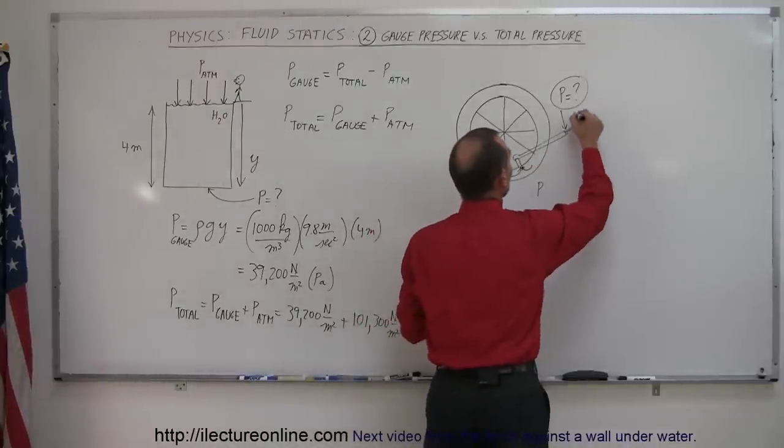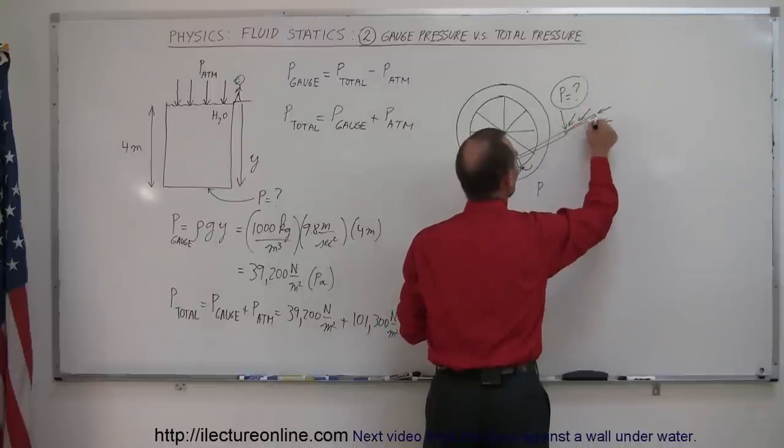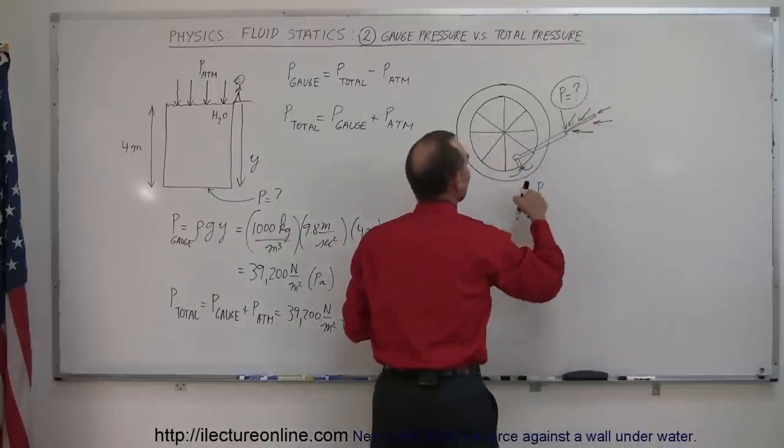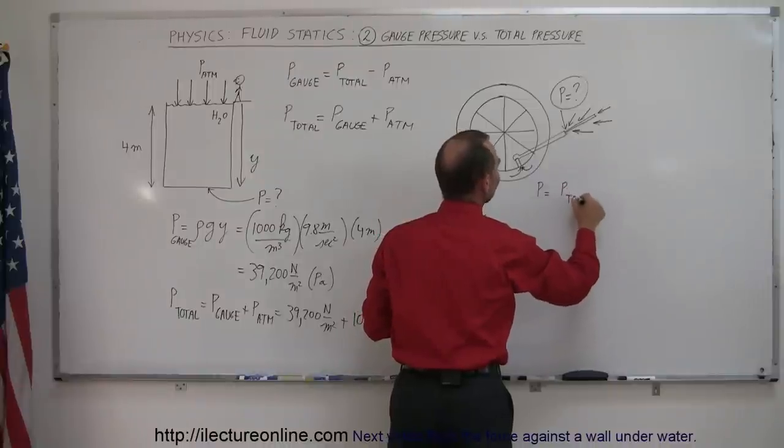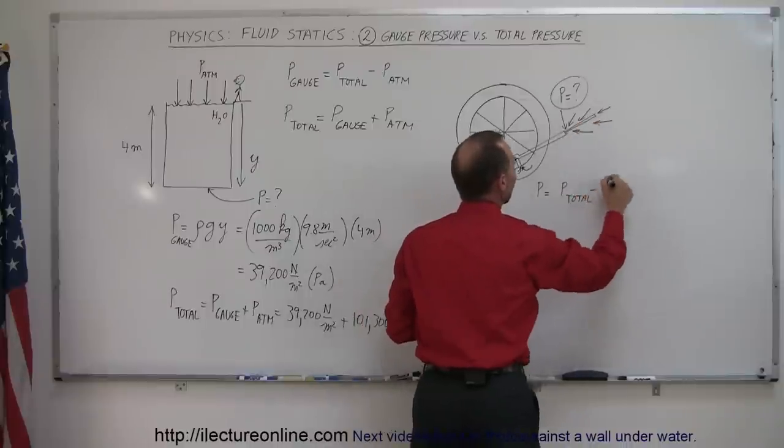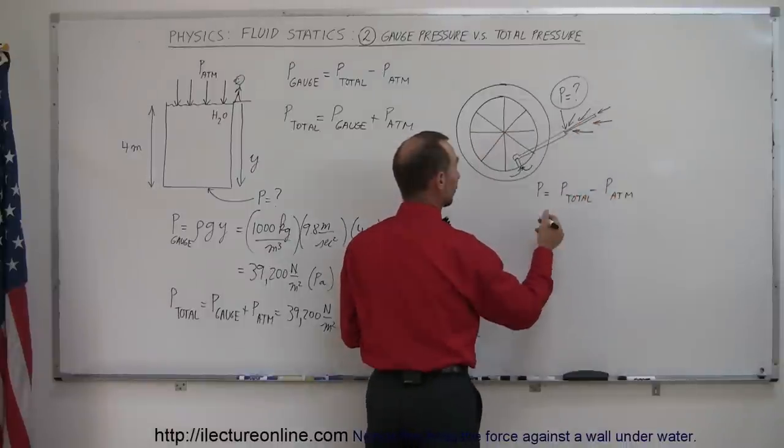In other words, since the air pressure is pushing back on the gauge in all directions, then the pressure that we're measuring here is equal to the total pressure inside the tire, minus the atmospheric pressure.